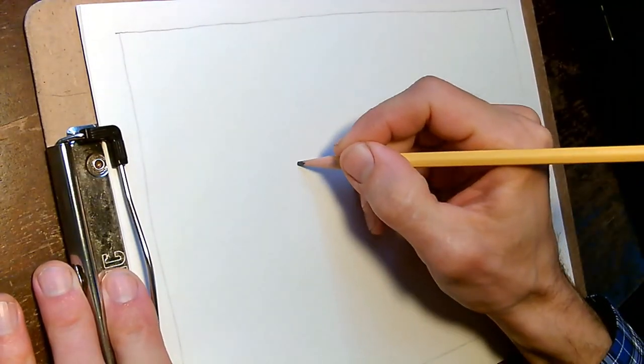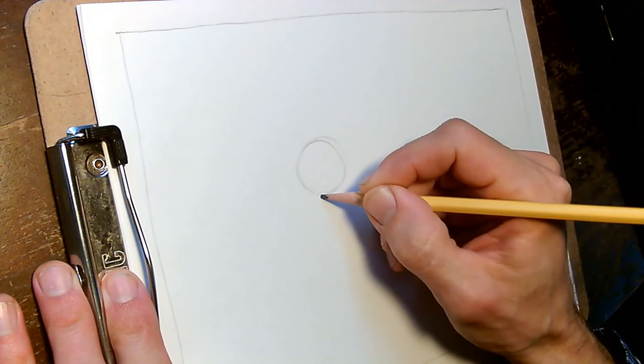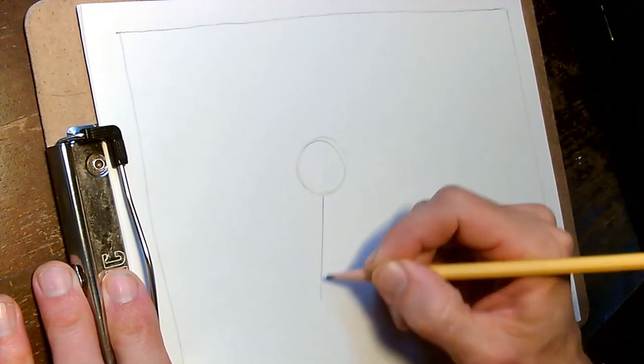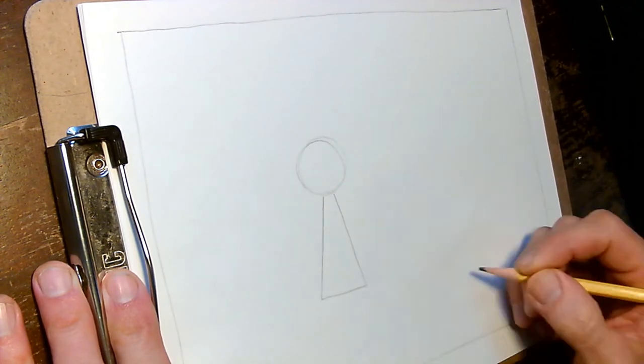I'm gonna draw Freeman Colby first. I always start with a circle for a head and his body is a triangle coming down off it like this. Keyhole shape.